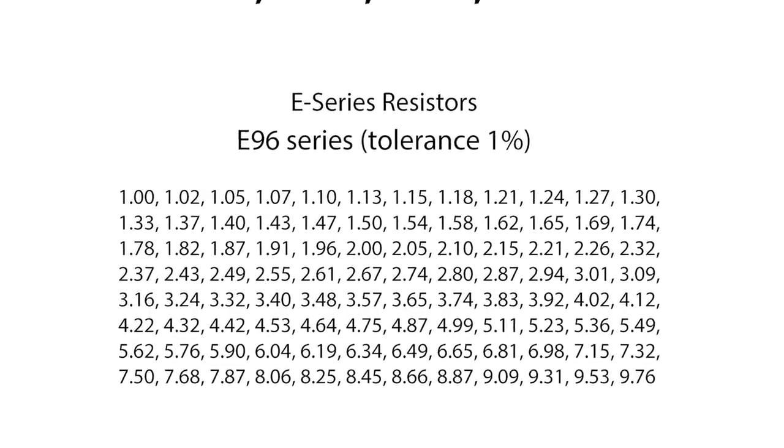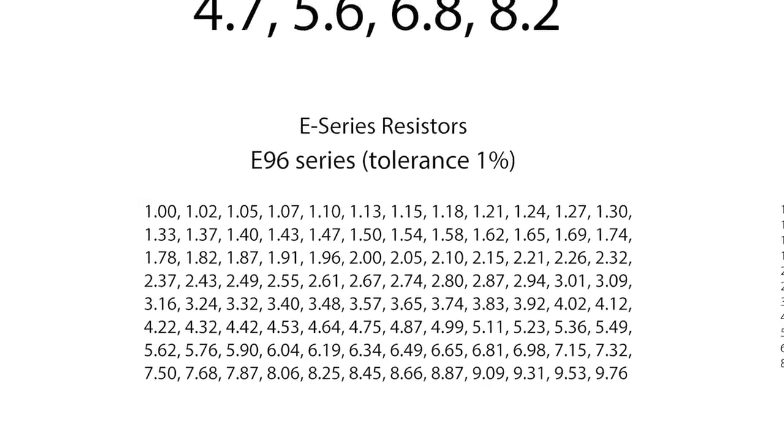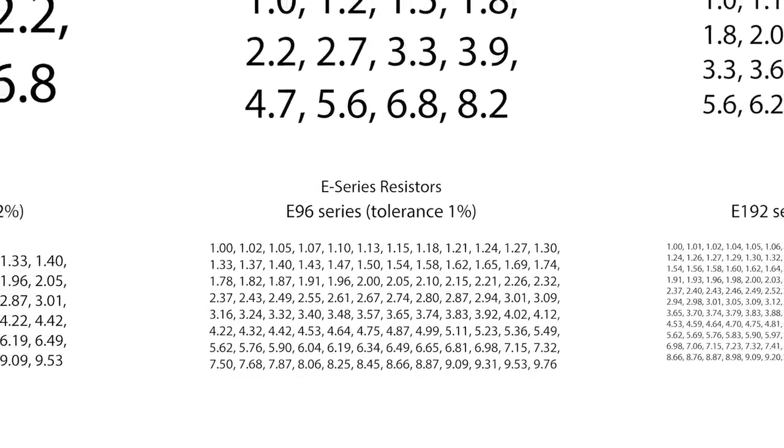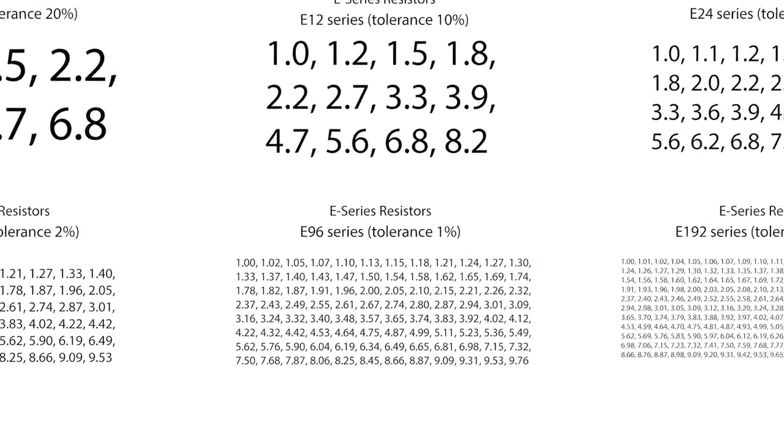Resistor values are sorted by tolerance and arranged into standard resistor values known as the E series. Each series is arranged so that, factoring in their tolerances, no two resistor values within that series would overlap. The series tolerance then determines how many different values fit in a series.